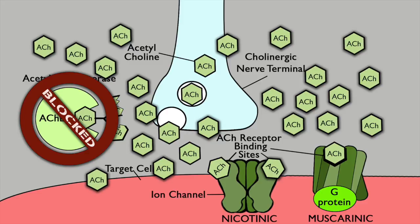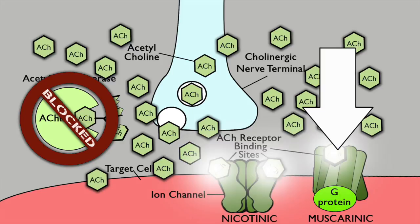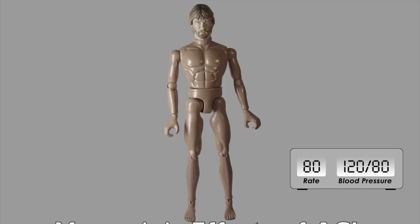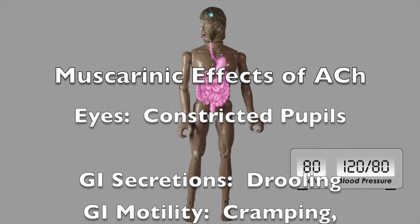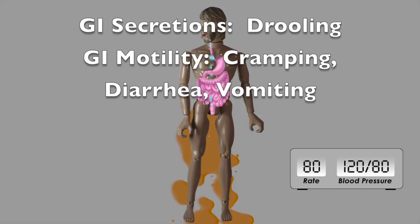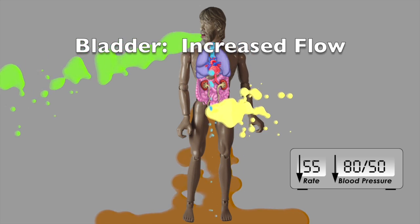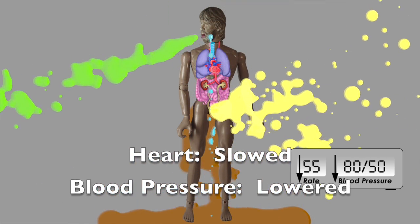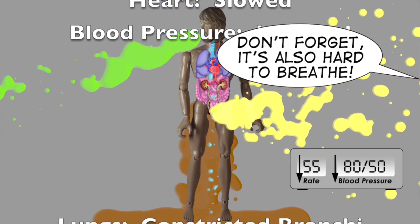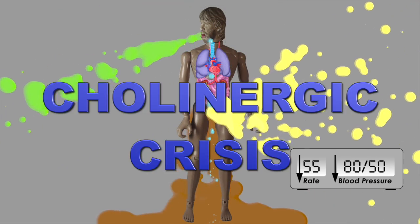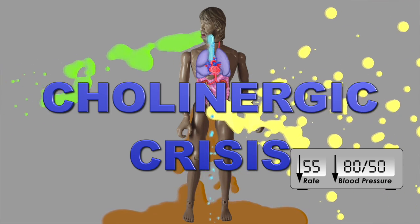With high levels of acetylcholine present throughout the body, what symptoms and side effects would we expect? When acetylcholine binds muscarinic receptors in the autonomic nervous system, we see parasympathetic effects: small pupils, increases in GI secretions and motility causing drooling, diarrhea, and cramping. You'll also see improved urine flow. Most concerning are a drop in heart rate and blood pressure, and bronchoconstriction making it hard to breathe. Overwhelming parasympathetic symptoms is called a cholinergic crisis — meaning there's too much acetylcholine.